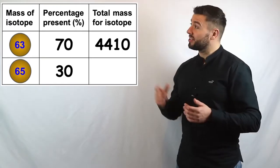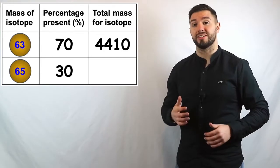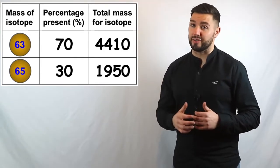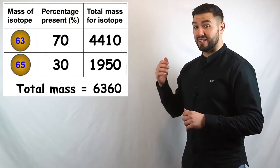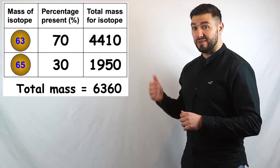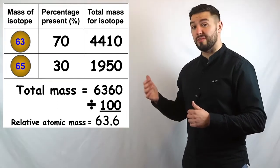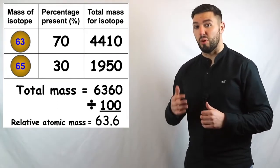So, 70 times 63 is 4410, and 30 times 65 is 1950. We add those two numbers together to get 6360, and then we divide by 100 because it was 100%. That gives us a relative atomic mass of 63.6.